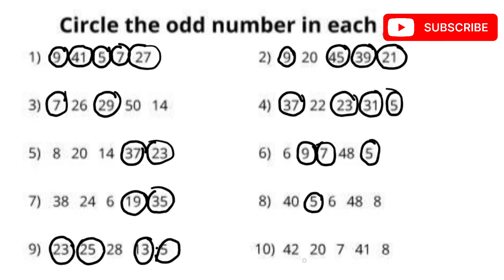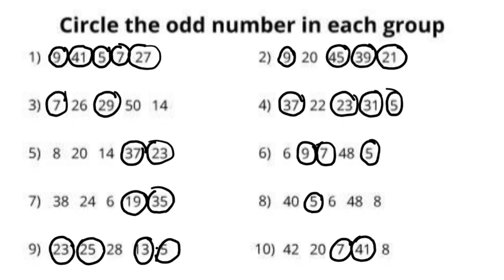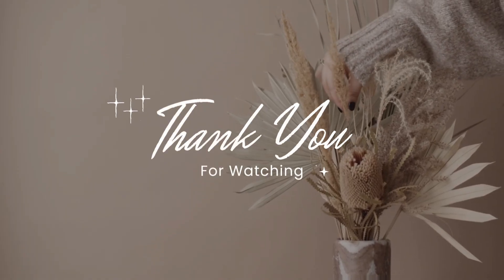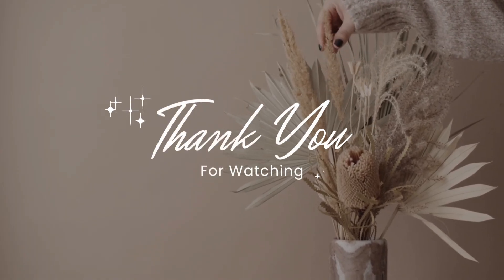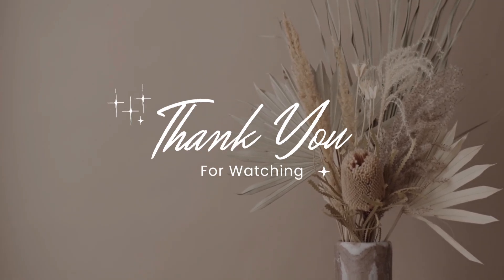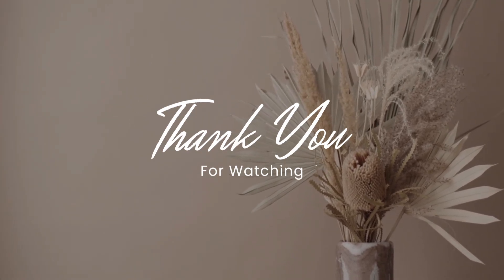Similarly, in question number 10, 7 and 41 are the odd numbers that we have to circle. I hope you all have understood the difference between even and odd numbers. If you like my video, do like, comment, share, and subscribe to my channel, and use the comment section for any queries related to the topic.